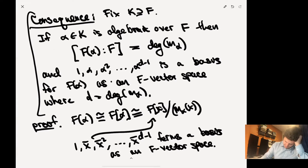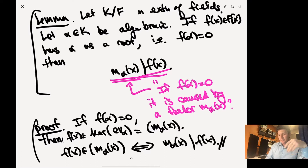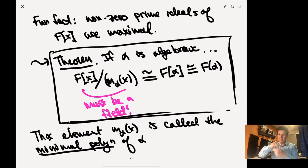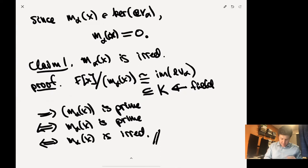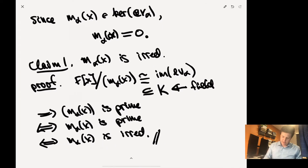To summarize: we showed the degree of a simple extension equals the degree of the minimal polynomial. We showed the minimal polynomial is indeed minimal in the sense that if some other polynomial has alpha as a root, the minimal polynomial divides it. We also showed that F[x] modulo the minimal polynomial is a field, and rational expressions in alpha come for free via the evaluation map.